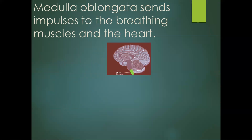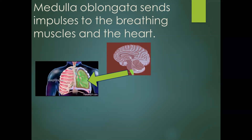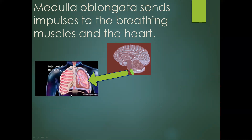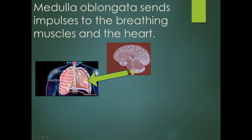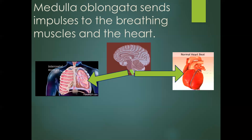The medulla oblongata responds by sending impulses to two parts of your body: the breathing muscles and the heart. The breathing muscles are your diaphragm, which sits between your chest cavity and the abdominal cavity, and the intercostal muscles between your ribs. Those muscles are stimulated, and impulses also go to the heart.